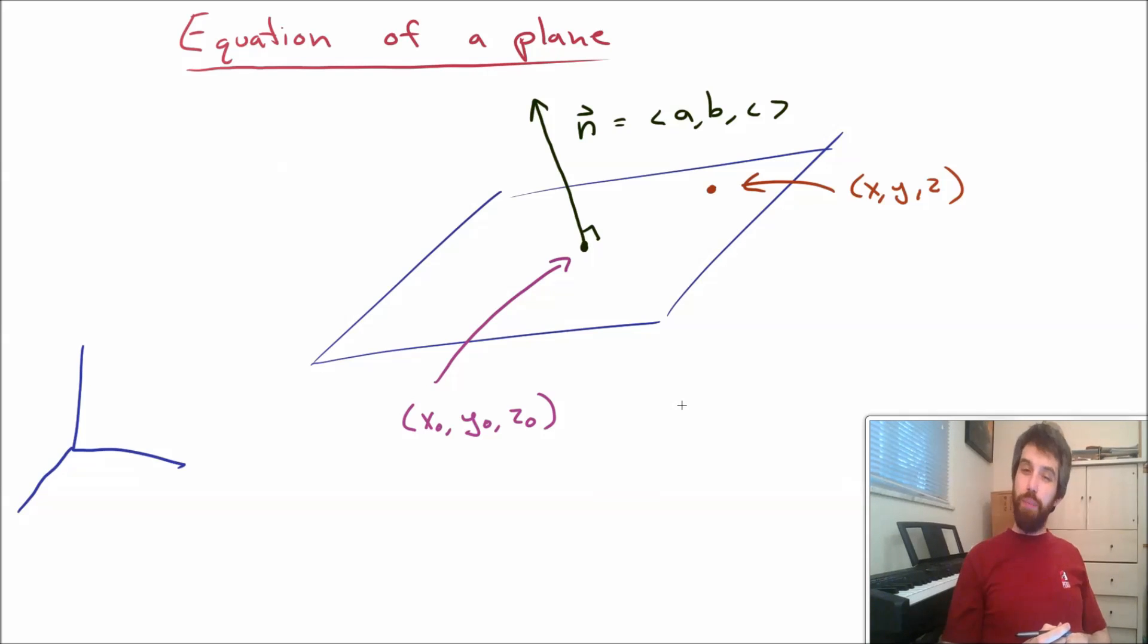Now, what does it really mean for this normal to be normal to the plane? I think my claim is this. This normal vector is normal to the plane if it is normal to every vector that lies inside of the plane.